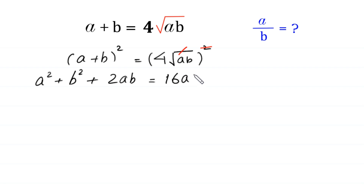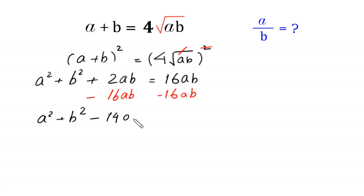Now we subtract 16ab from both sides. On the left side we subtract 16ab, and on the right side 16ab minus 16ab cancels out, leaving zero. So we have a squared plus b squared minus 14ab equals zero.